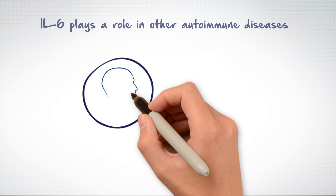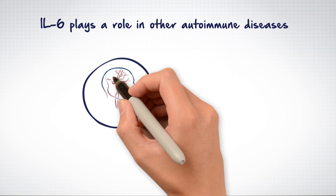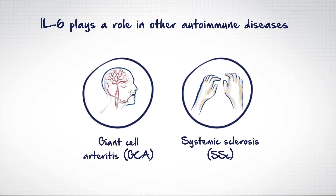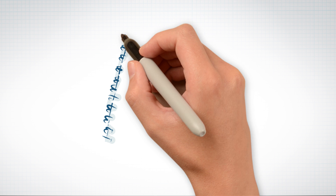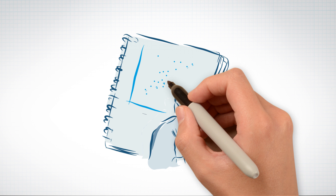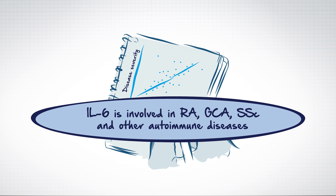Other autoimmune diseases where IL-6 plays a key role in pathogenesis are giant cell arteritis and systemic sclerosis. As in RA, in giant cell arteritis and systemic sclerosis, there is a correlation of serum IL-6 concentration with disease activity, with higher levels associated with increased disease severity.